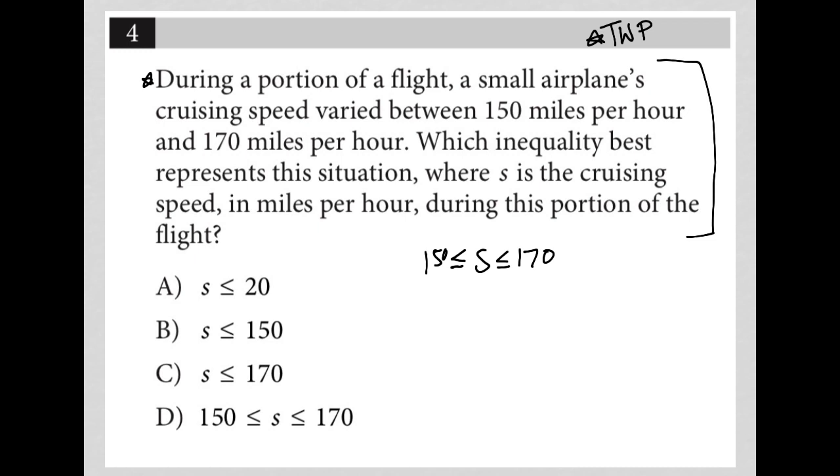The next sentence says which inequality best represents this situation where S is the cruising speed. We have the right variable in miles per hour, the right units, nothing to convert during this portion of the flight. I think we're good just by translating that first sentence. Therefore the answer must be choice D.